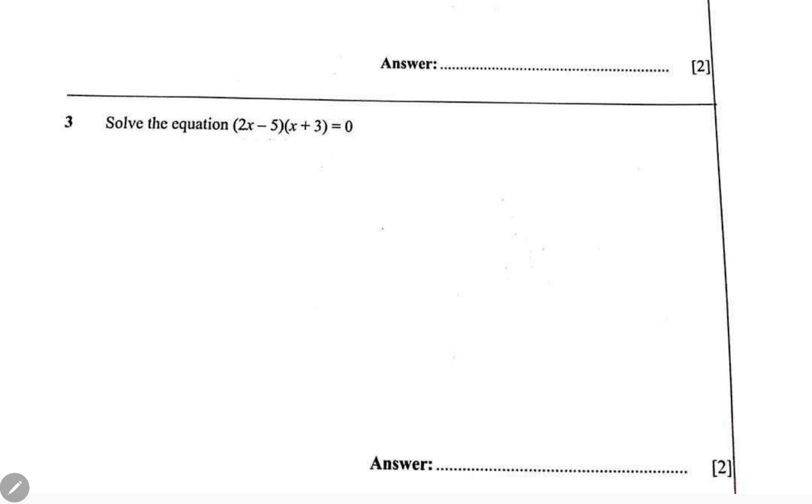Another one is here, solve the equation. See that this part has already been factorized for you - don't start expanding. Just equate this part to zero and that part to zero and you are good to go. So 2x minus 5 is equal to zero, you say, or x plus 3 is equal to zero.